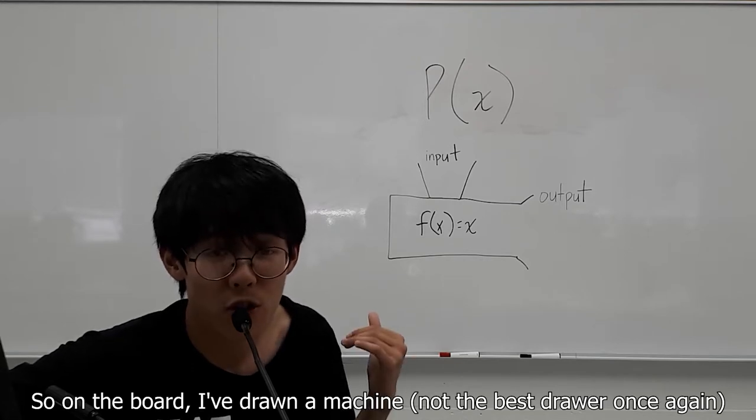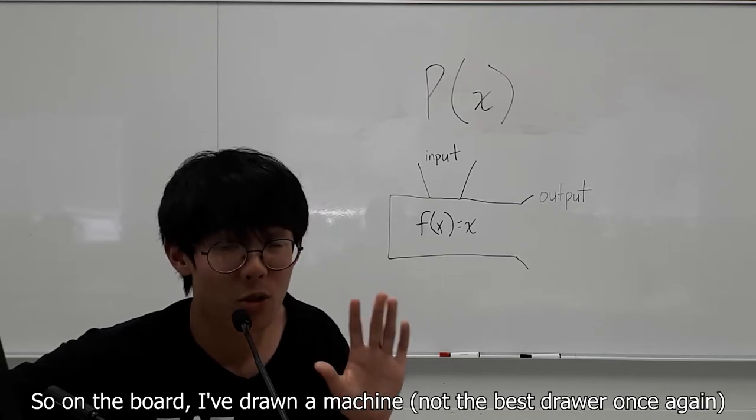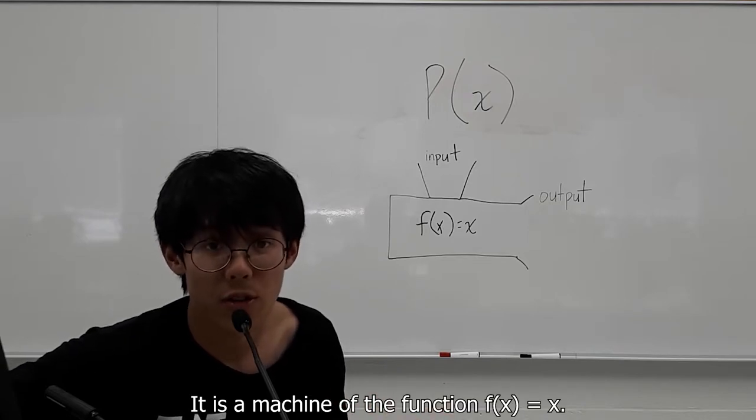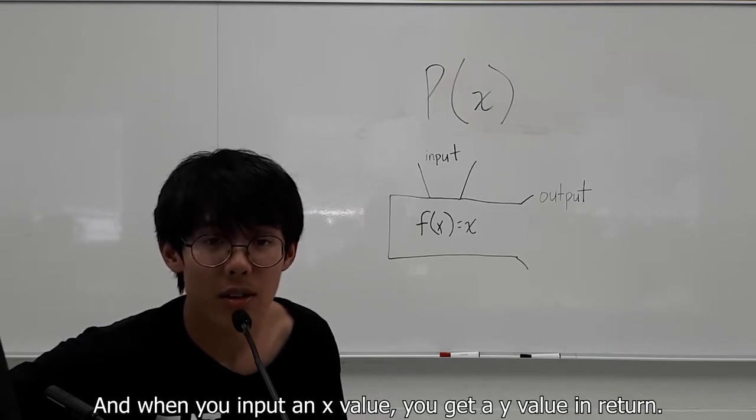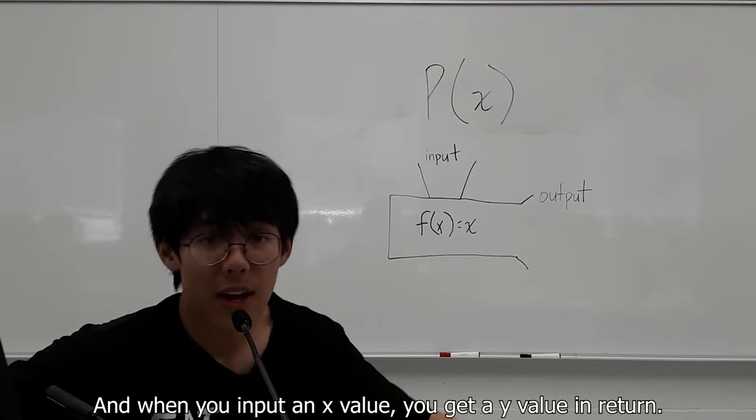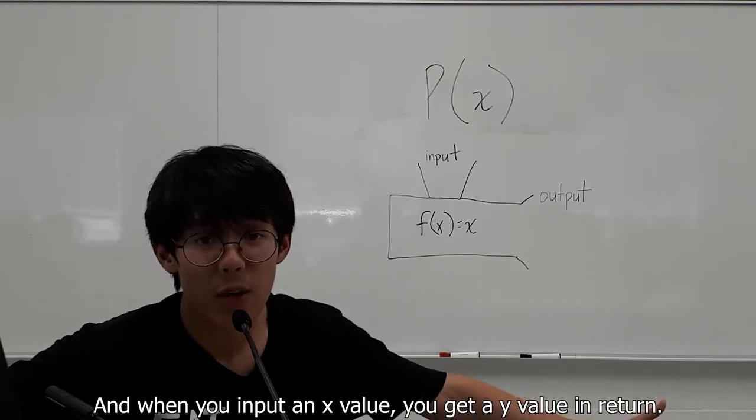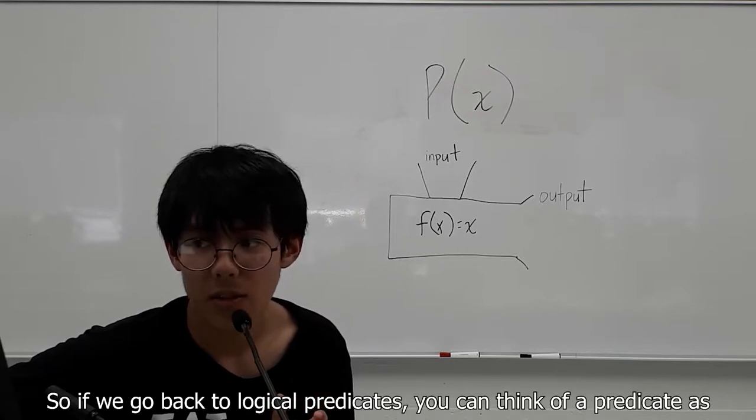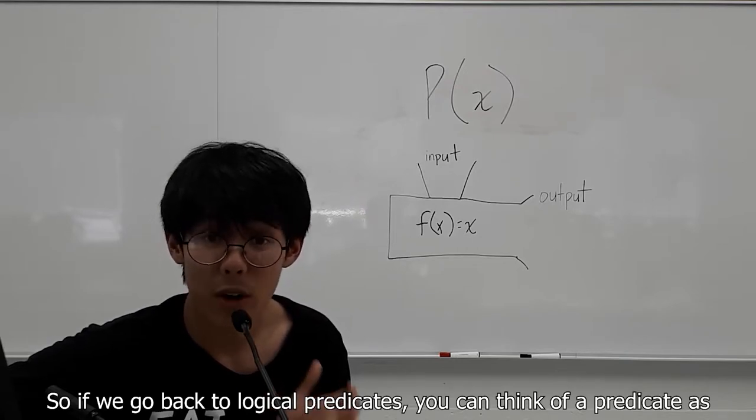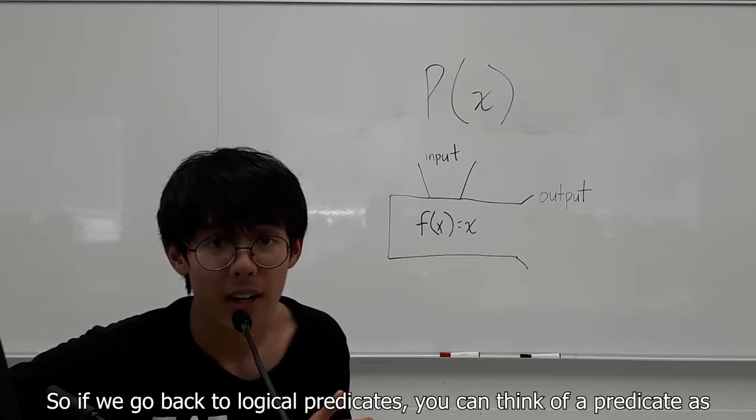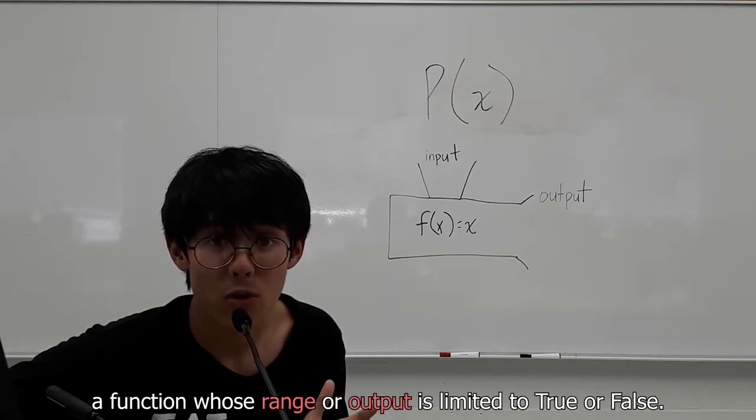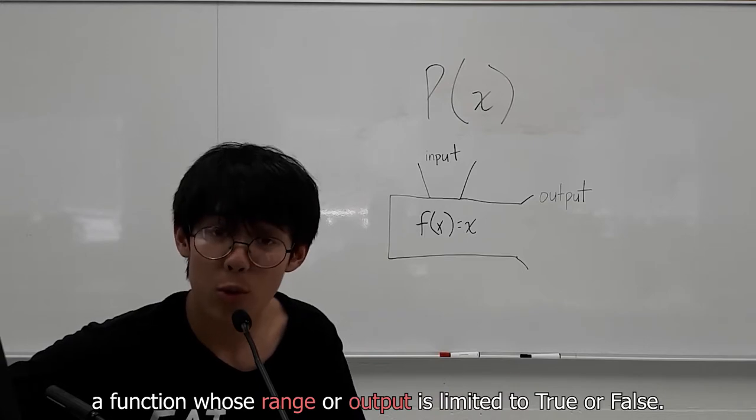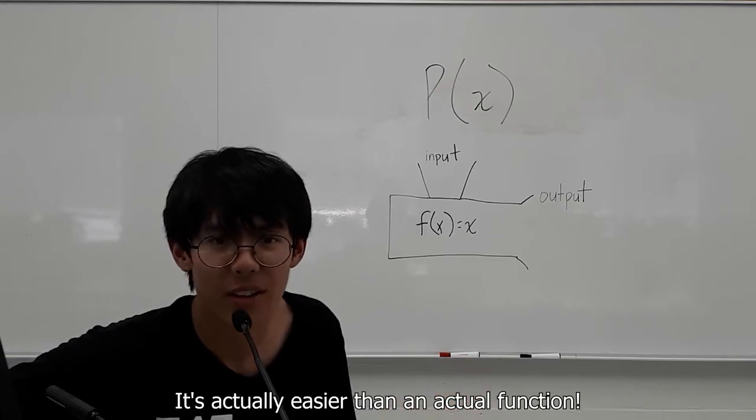So on the board, I'm drawing a machine. I'm not the best drawer, once again, but it is a machine of the function F of X equals X. And when you input an X value, you get a Y value in return. That is the output. So if we go back to the logical predicates, you can think of a predicate as a function whose range or output is limited to true or false. It's actually easier than an actual function.